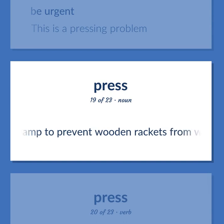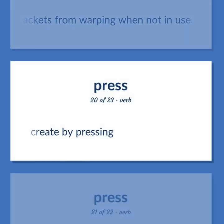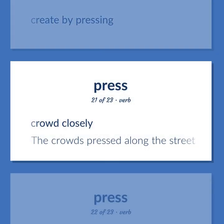Press (noun): Clamp to prevent wooden rackets from warping when not in use. Press (verb): Create by pressing. Crowd closely. Example: The crowds pressed along the street.